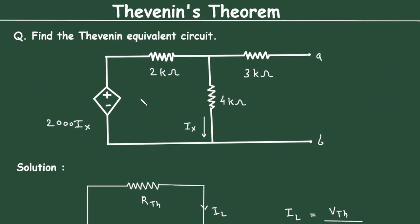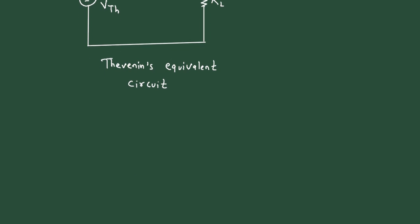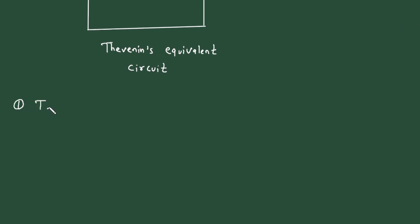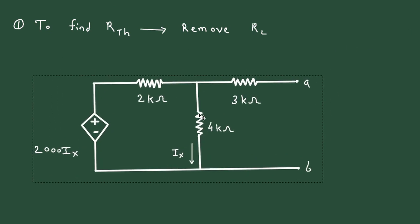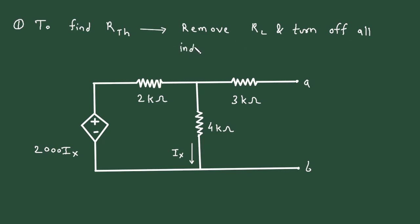But here there is a dependent current-controlled voltage source. So step number one will be to find Rth. Now to find Rth, our first step is to remove Rl. But as we can see, Rl is absent here. Then the second step is to turn off all independent sources.